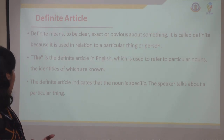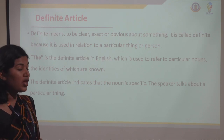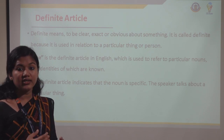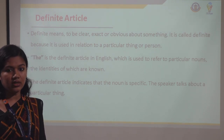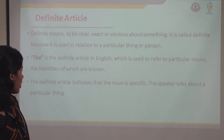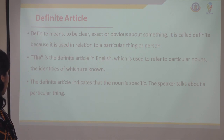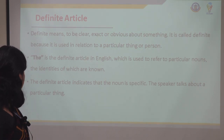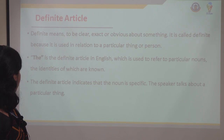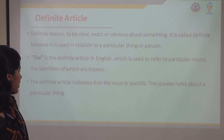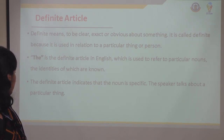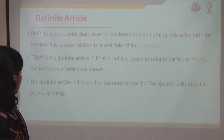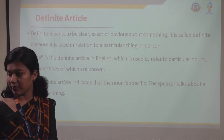We use the definite article 'the' to talk about a particular noun whose identity is known. The definite article indicates that the noun is specific, so the speaker is talking about a particular thing.